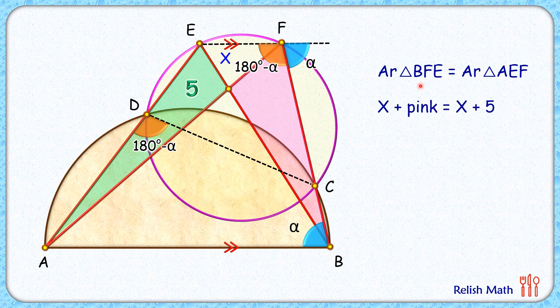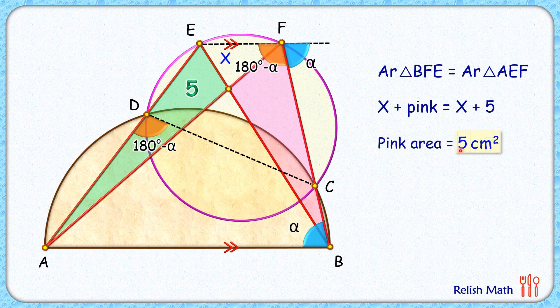And triangle AEF is 5 plus x. X will get cancelled on both sides and we'll get area of pink triangle as 5 centimeter square, and that's our answer. I hope you enjoyed the solution. I will see you in the next video. Till then, tata bye bye.